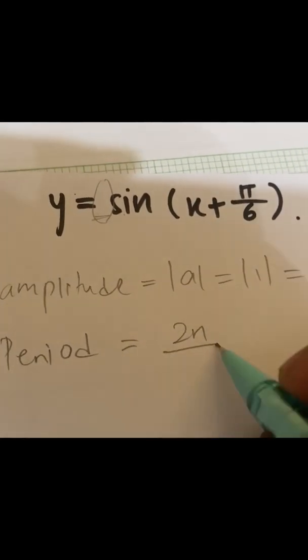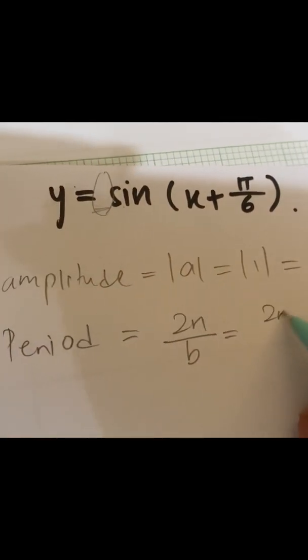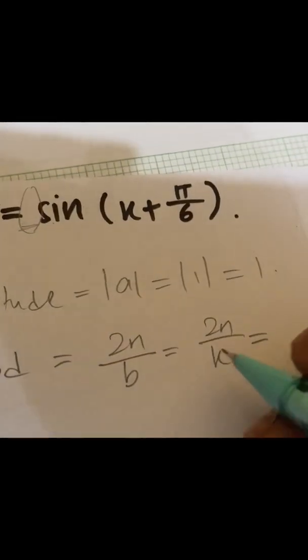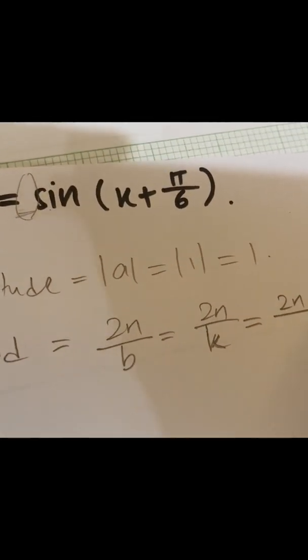The formula is 2π over b, or you can also use 2π over k, which is 2π.